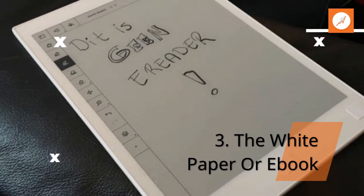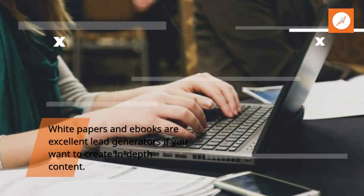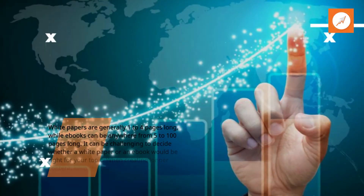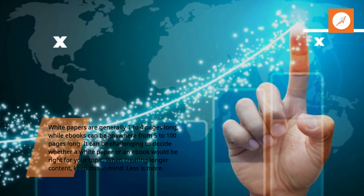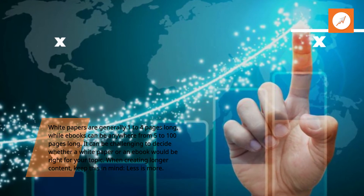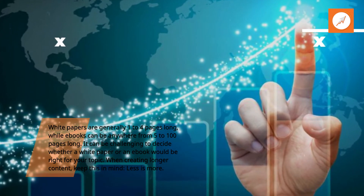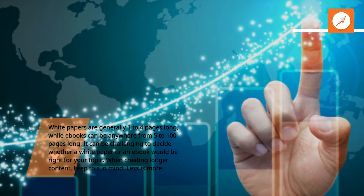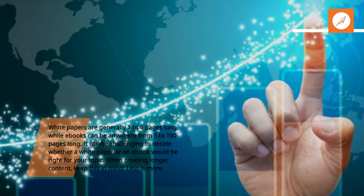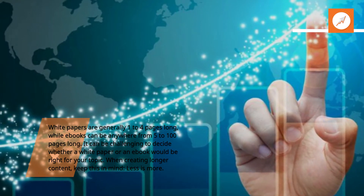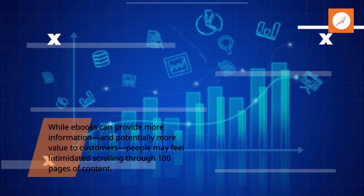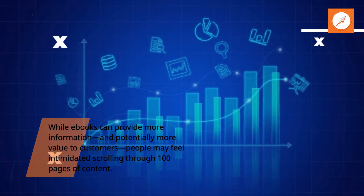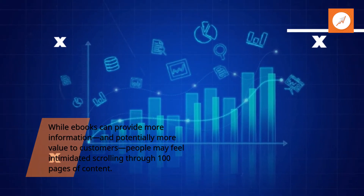Idea 3: The White Paper or Ebook. White papers and ebooks are excellent lead generators if you want to create in-depth content. White papers are generally 1 to 4 pages long, while ebooks can be anywhere from 5 to 100 pages long. It can be challenging to decide whether a white paper or an ebook would be right for your topic. When creating longer content, keep this in mind: less is more. While ebooks can provide more information and potentially more value to customers, people may feel intimidated scrolling through 100 pages of content.